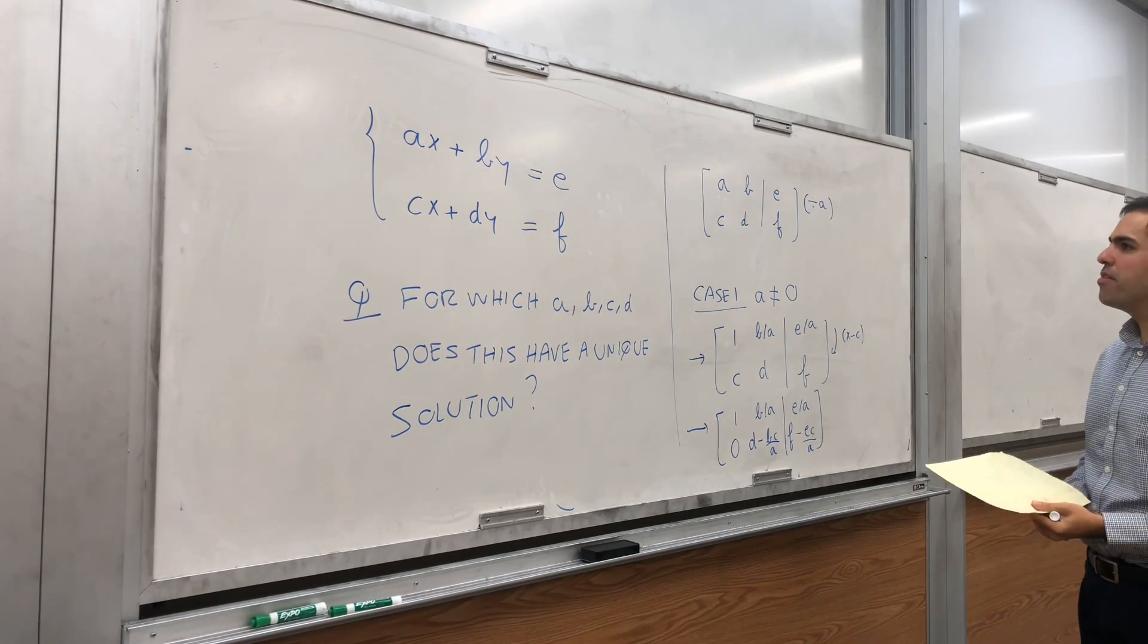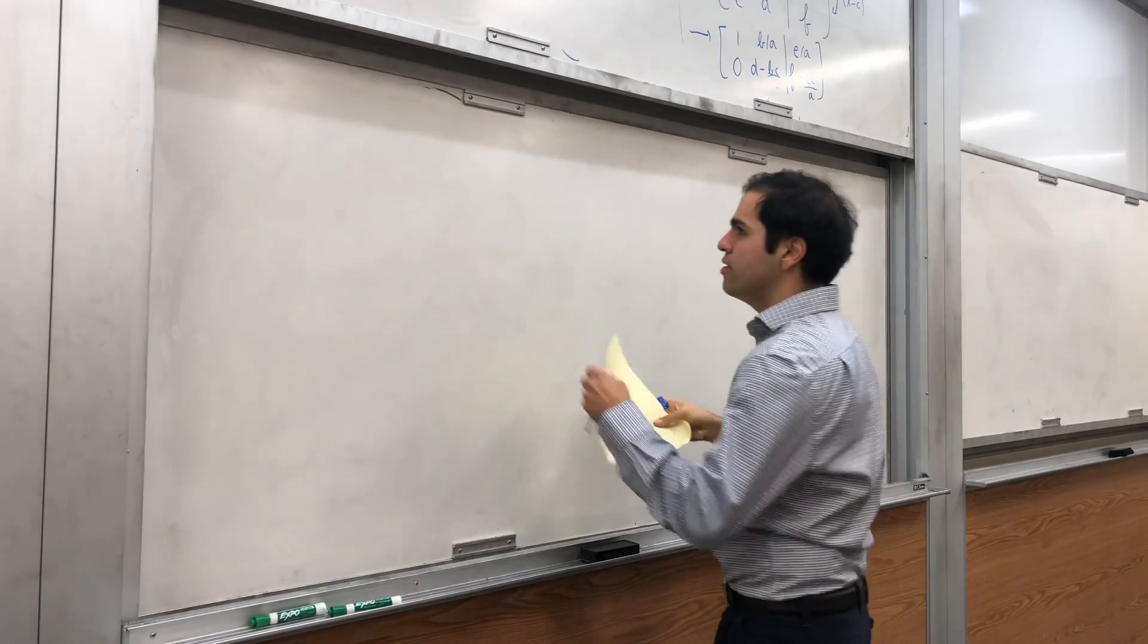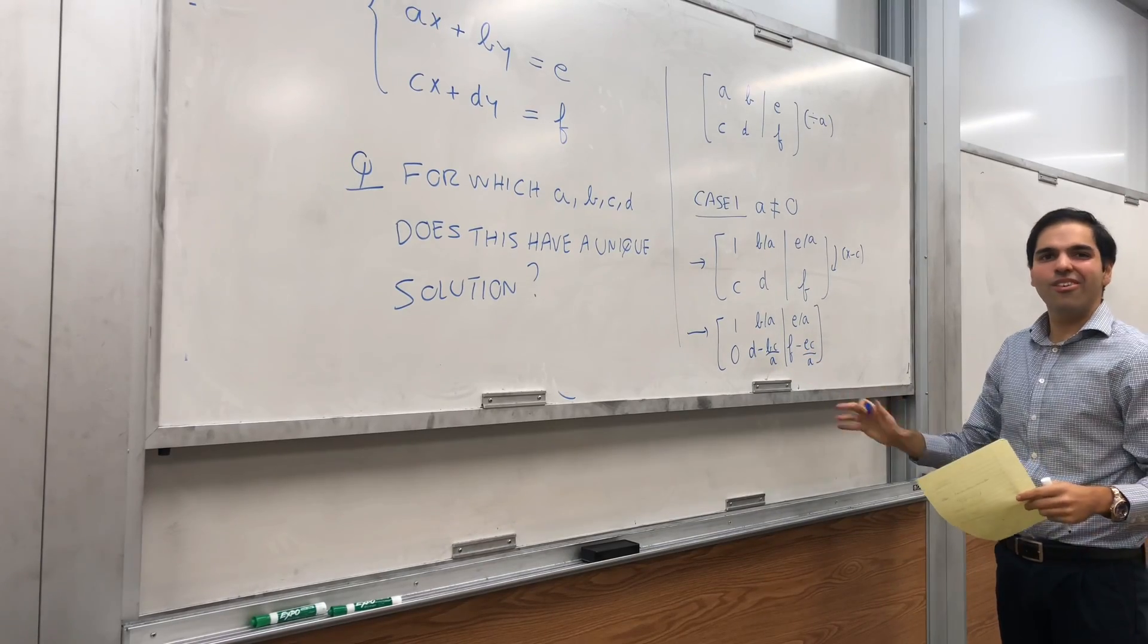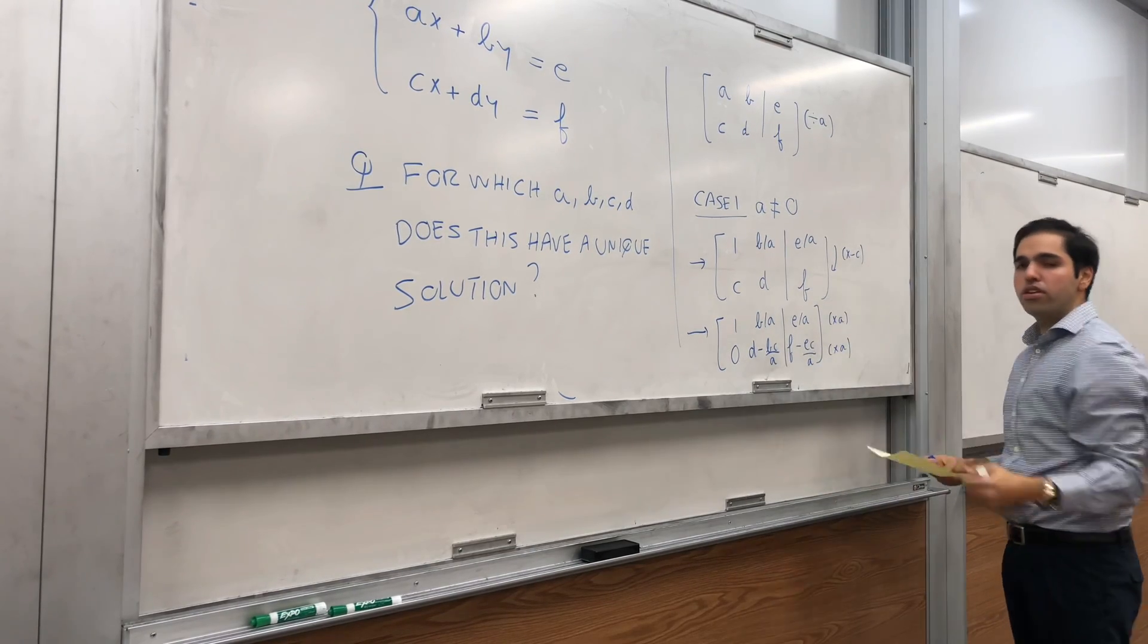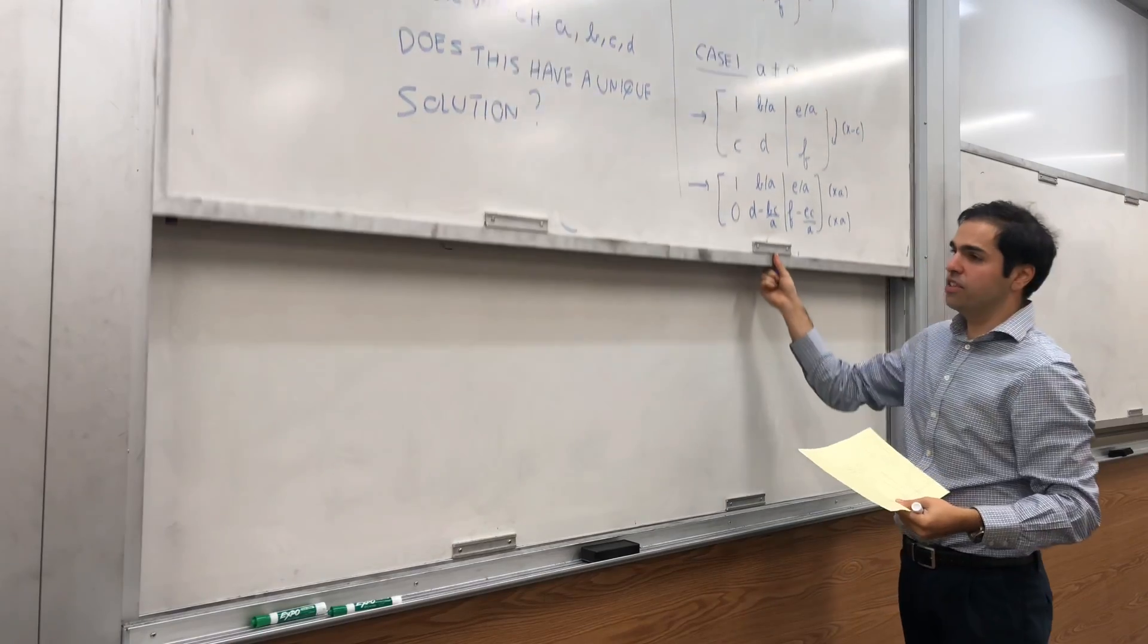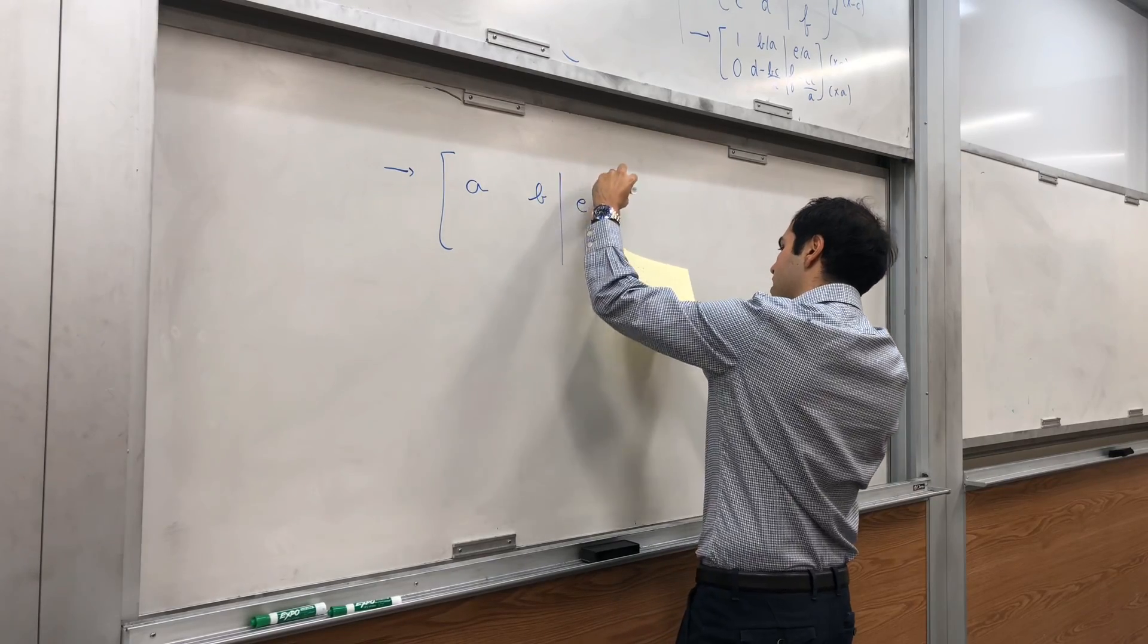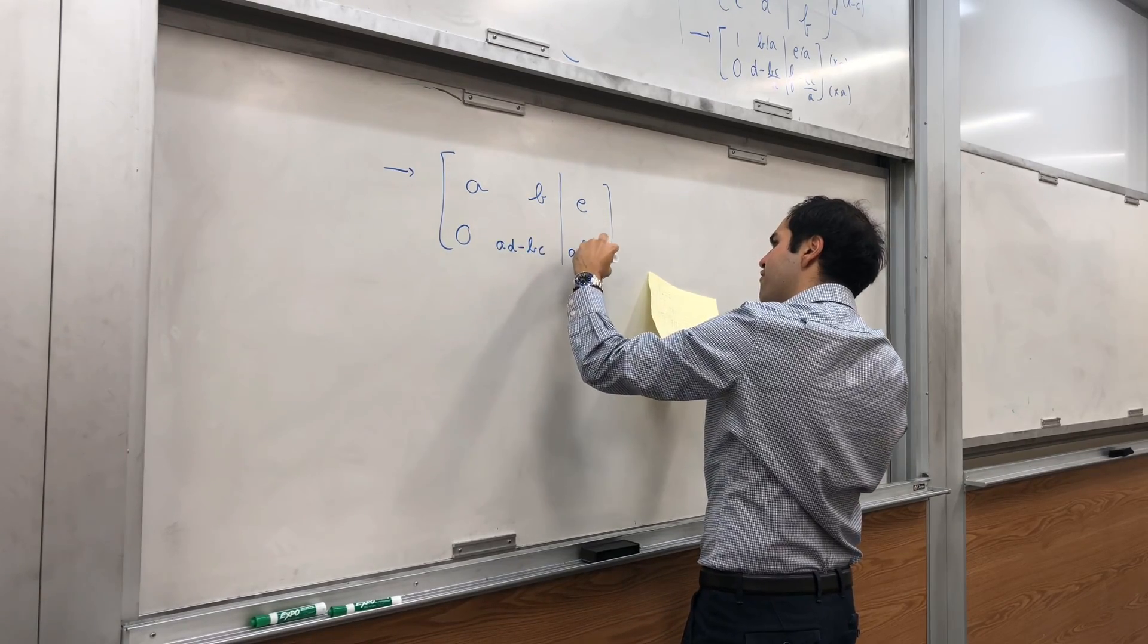And this becomes D minus BC over A, and here F minus EC over A. That's good, let's put it on a common denominator. And we get the following, still 1. And then here's one thing, so strictly speaking, not necessary for the row echelon form, but to just make things pretty, let's just multiply all sides by A. And it's okay, because A is non-zero. Because again, our goal is not to solve the system, but to figure out when this has a unique solution. So then we get A and then B, and E. And zero, AD minus BC, and AF minus EC.